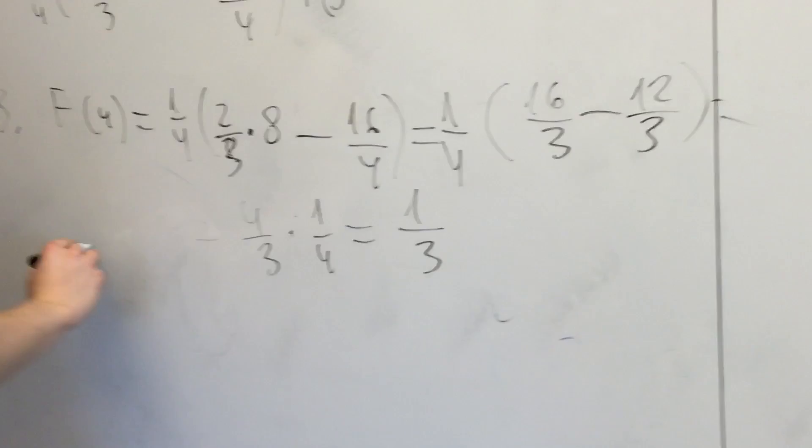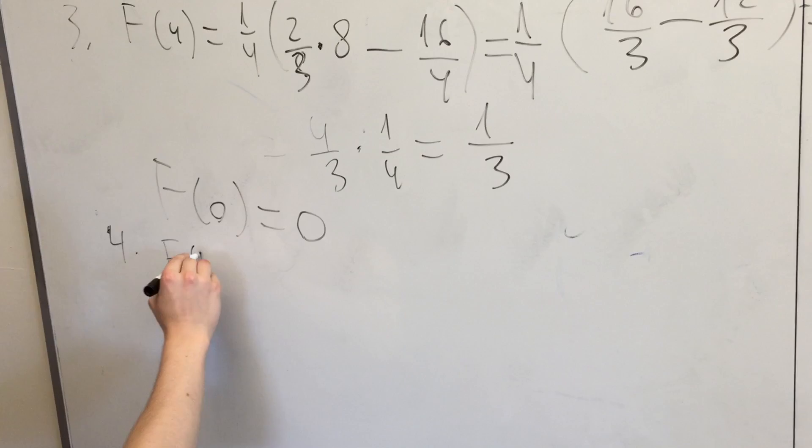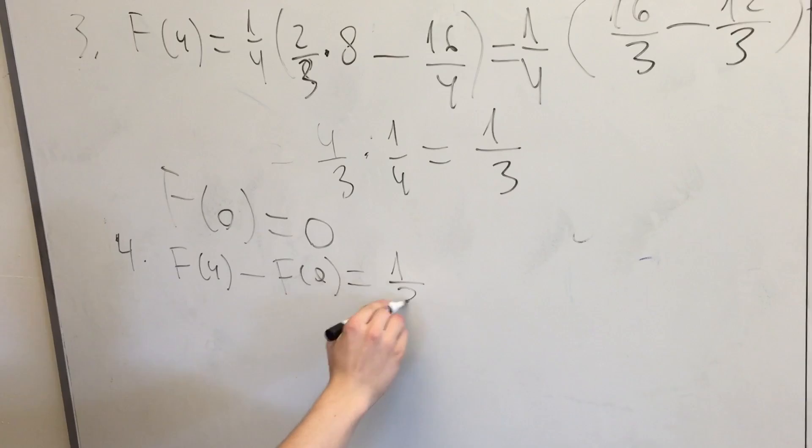So now, the average speed of the fish relative to the shore will be f(4) minus f(0), which equals 1/3. And the problem says assume that 1 unit on the y-axis equals 1 meter per second, so our answer will be in meters per second.